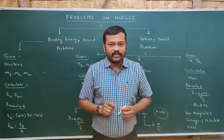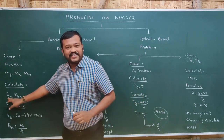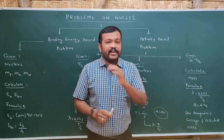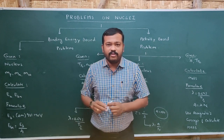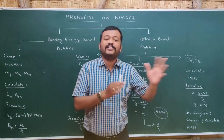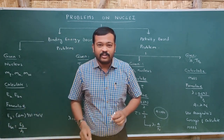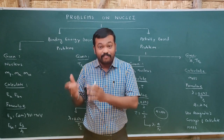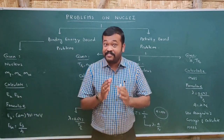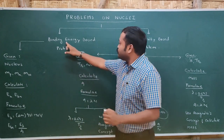In a binding energy problem, the nucleus will be given, mass of the proton, mass of the neutron and mass of the nucleus will be given. We need to calculate binding energy as well as specific binding energy. The binding energy formula is delta M into 931 MeV. First we need to calculate mass defect — the difference of mass of the nucleus and mass of the nucleons forming the nucleus — then multiply by 931 MeV. Specific binding energy is binding energy divided by mass number.